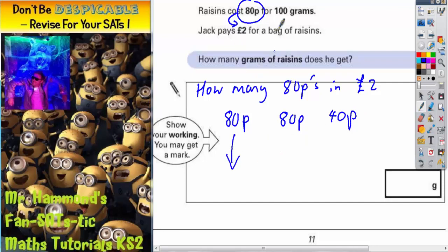So for 80p, we can get 100 grams. For another 80p, we can get another 100 grams. And for 40p, this is only half as much money, so we can only get half as many grams. So half as many grams as 100 grams would be 50 grams. So 80p, 80p and 40p makes the £2.